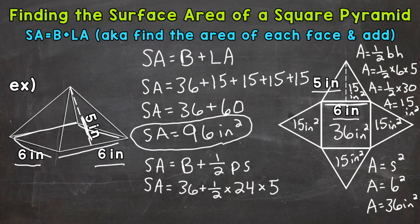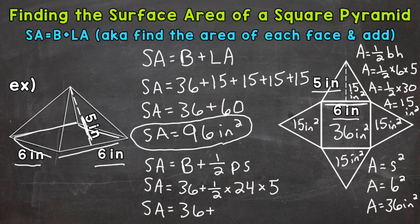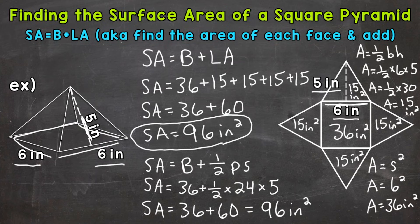Once we have everything plugged in, we can solve. Surface area equals 36 plus one half times 24 times 5. One half times 24 is 12, times 5 gives us 60. So we end up with 36 plus 60, which gives us a total surface area of 96 square inches — the same answer as before.